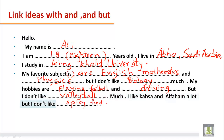Let me repeat the full email: 'Hello. My name is Ali. I am 18 years old. I live in Abha, Saudi Arabia. I study in King Khaled University. My favourite subjects are English, Mathematics and Physics, but I don't like Biology much. My hobbies are playing football and driving, but I don't like volleyball much. I like Qabsa and Al Faham a lot, but I don't like spicy food.'